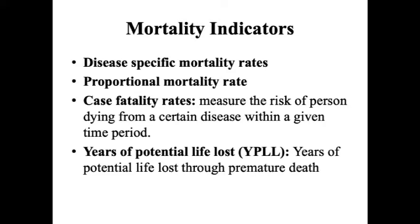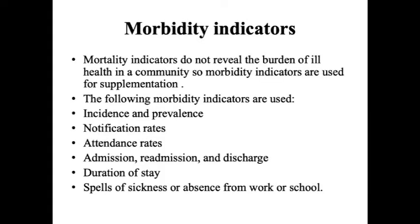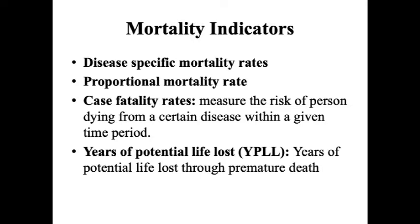Case fatality rate measures the risk of a person dying from a certain disease within a given time period. Some diseases have a 100% case fatality rate — for example, rabies has a 100% case fatality rate. Years of Potential Life Lost (YPLL) refers to premature death — for example, if you were supposed to die at 75 years but died at 30, you lost 45 years of potential life.